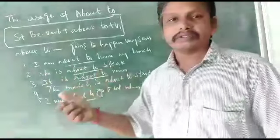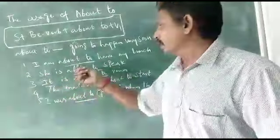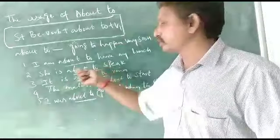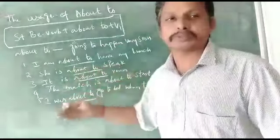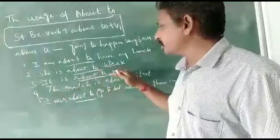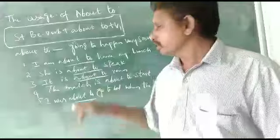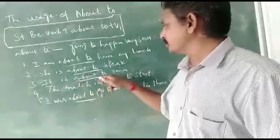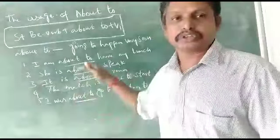She is about to speak. She is going to speak. About to is similar to going to. She is about to speak - she is going to speak soon after. It is about to rain. It is similar to it is going to rain. So about to can be replaced with going to.